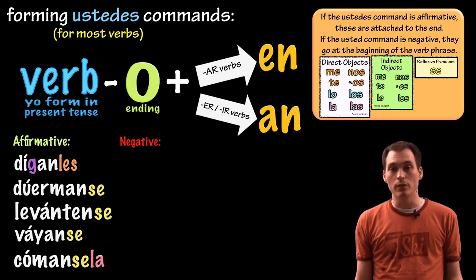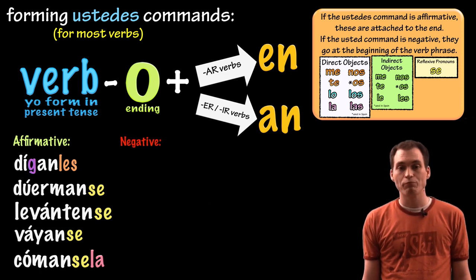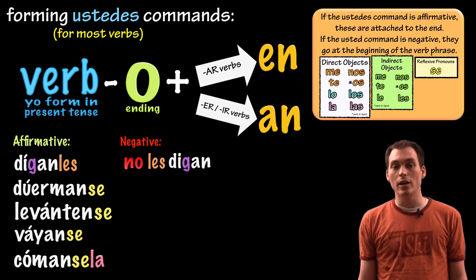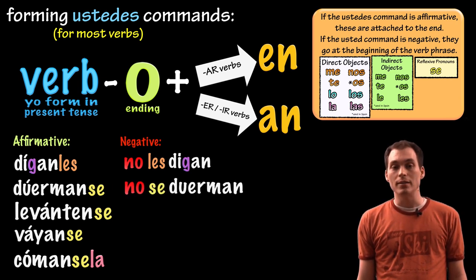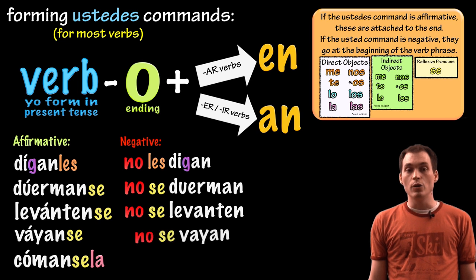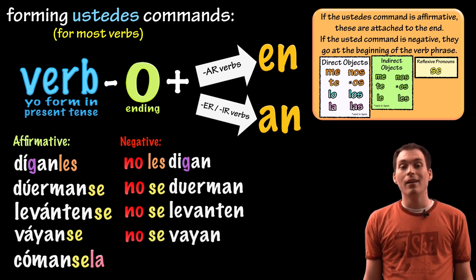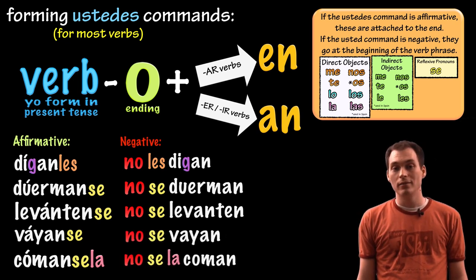If they're negative, we're going to put these pronouns before, like we would normally after the no. No les digan, don't tell them, no se duerman, don't fall asleep. No se levanten, don't get up, no se vayan, don't go away, no se la coman, don't eat it.